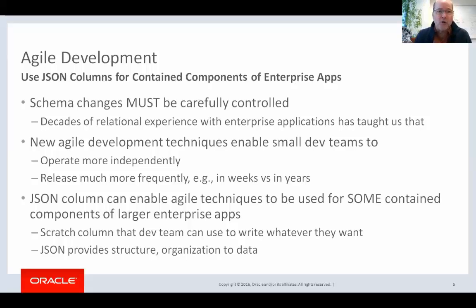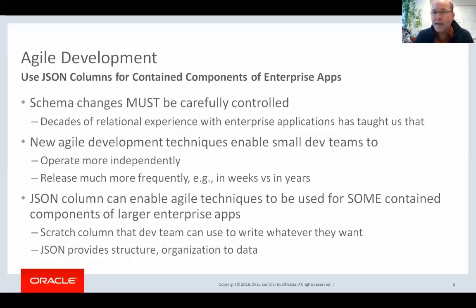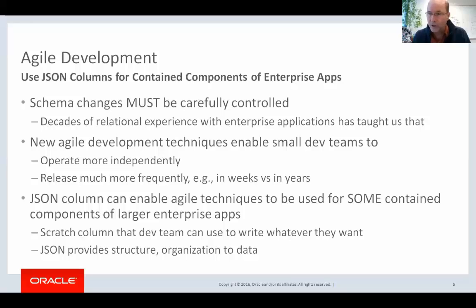Over the last decade or so, new agile development techniques have emerged that have been very successful. They've enabled small development teams to operate more independently and release much more frequently — typically in weeks — as opposed to many months or years with typical enterprise relational apps, where there's really no choice but to use a more waterfall approach with releases every year, extensive testing, and all changes together. What I'm talking about here is using JSON columns to enable agile development techniques for some self-contained components of larger enterprise apps — not advocating this for the whole enterprise app, just for certain select components.